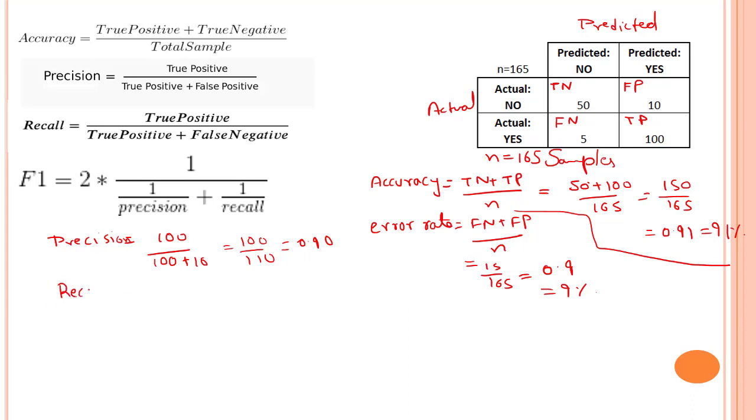Let's check out our recall. So our recall is true positive. Again, true positive is 100 by true positive plus false negative. So that is 100 by 105. 100 by 105 is somewhere near to 95%, that is 0.95.